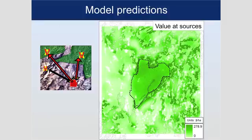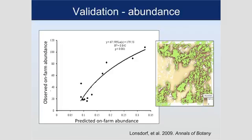This is essentially a map of where the value is sitting, calculated in dollars. So the question is, does this match my findings? We've been doing some validation recently about this. Predicted on-farm abundance from that model — parameterized blind to my field data — and then comparing it to my field data. And it's a pretty good fit on predicting where abundance of bees would be. That's this result.